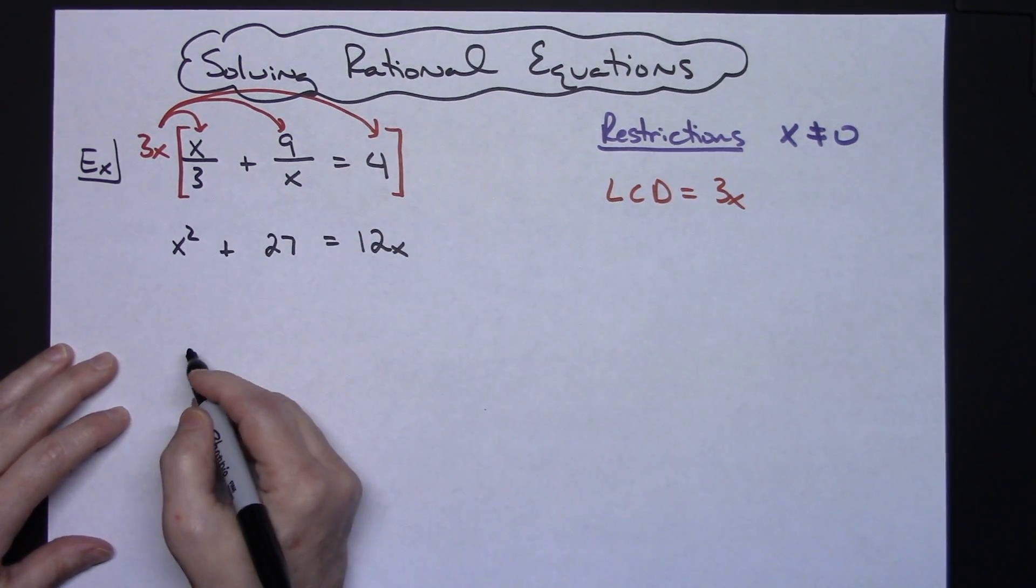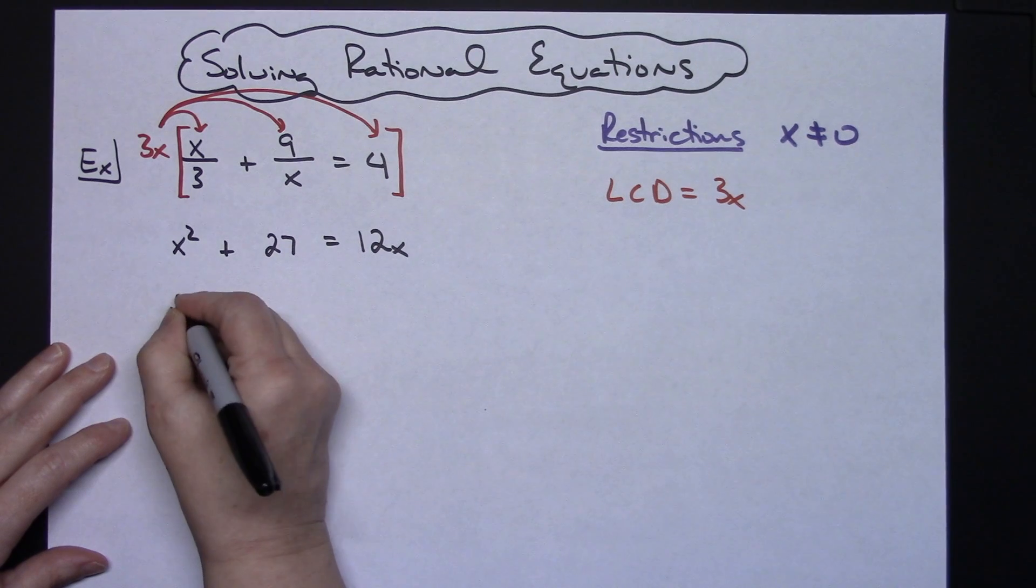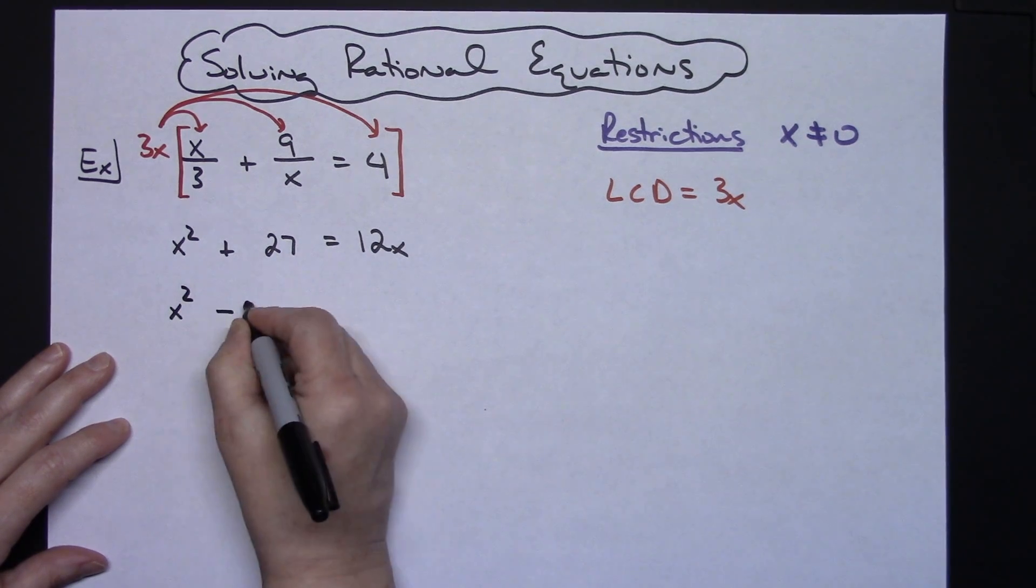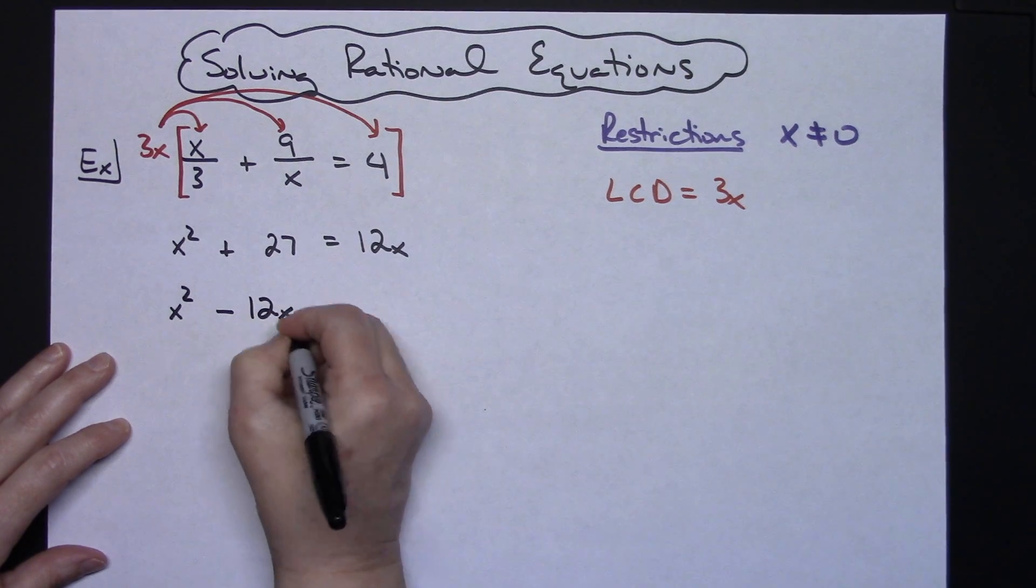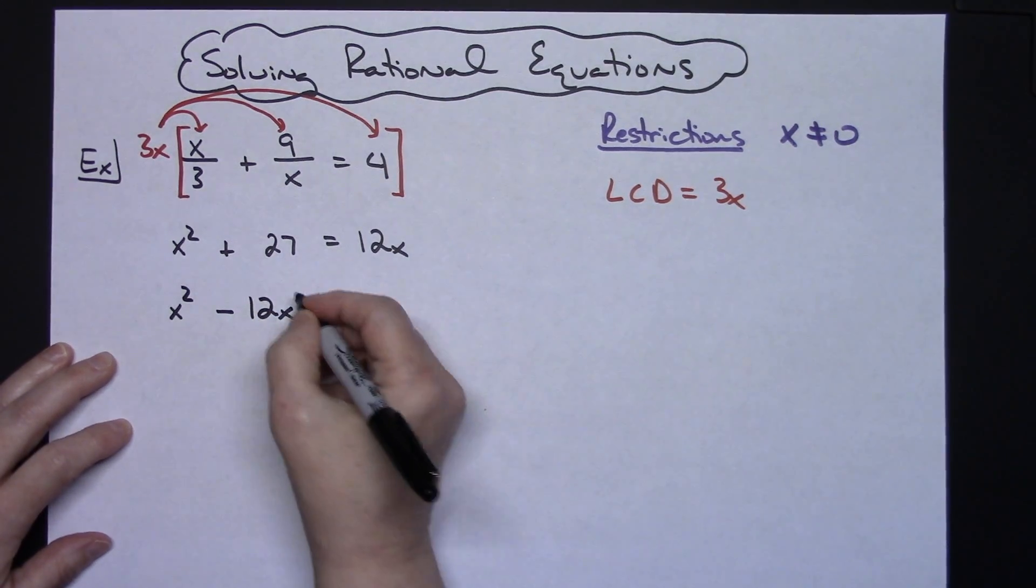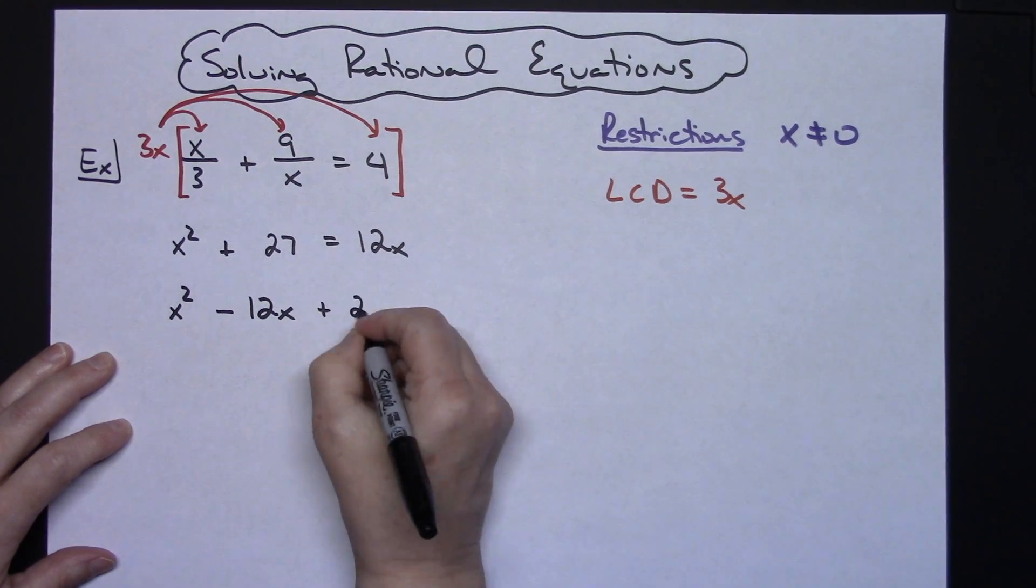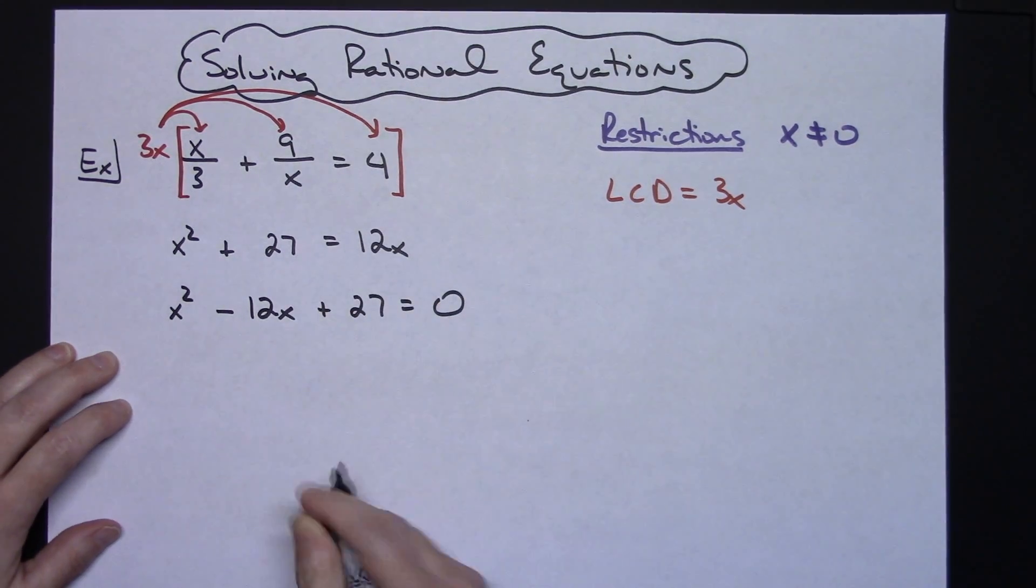So when I subtract 12x from both sides, I'm going to have x squared minus 12x because I want that in the middle, so I'm just going to go ahead and put it there. Plus 27 equals 0.